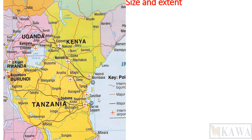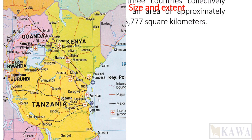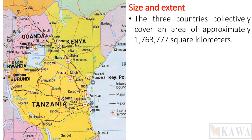We are going to focus on the size and extent of East Africa — which country is bigger than the other, and which is smaller. The three countries of East Africa collectively cover a total area of 1,763,000 square kilometers, of which Tanzania is the largest country. It is larger than Kenya and Uganda, and Tanzania alone covers a total area of 945,000 square kilometers, with an estimated population of 59 million, quoting figures from the UN.